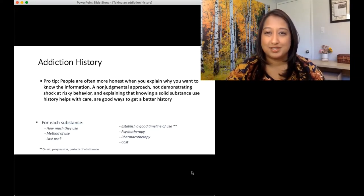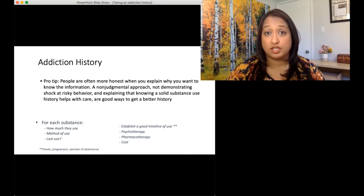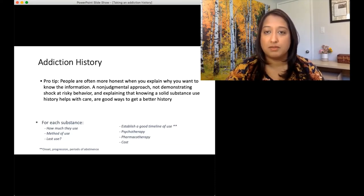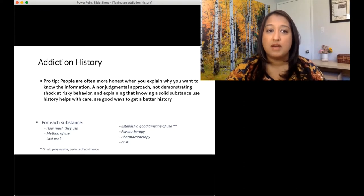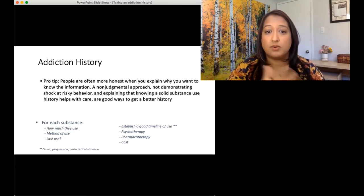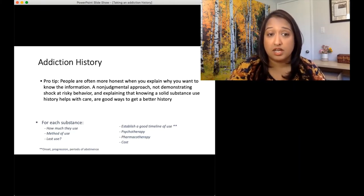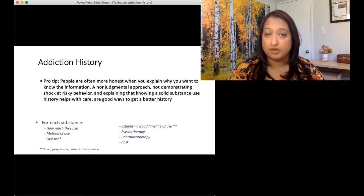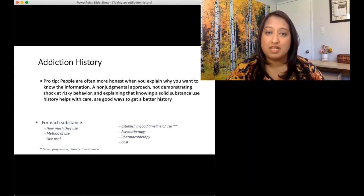Pro tip: when you're doing an addiction history, patients are often going to be more honest with you if you can explain why you want to know the information and if you're asking in a non-judgmental manner. Just straightforward asking of questions and explaining, 'It's really important for me to provide you with good care and I need to know the answers to these questions.' Not demonstrating shock at risky behavior is very important, and explaining that knowing a solid substance use history helps with care. For example, 'I need to know how much fentanyl you use because I'm worried that you're going to go into withdrawal and I want to make sure I can prescribe you enough opioids to prevent that.' When you explain it like that, people are a lot more likely to be fully honest with you.